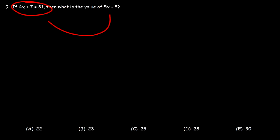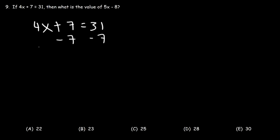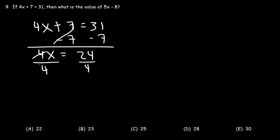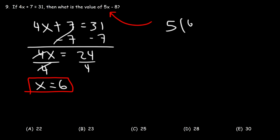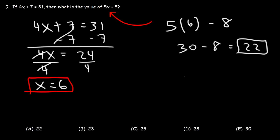Number 9. If 4x plus 7 is equal to 31, then what is the value of 5x minus 8? We solve for x in the equation first. Subtracting both sides by 7: 31 minus 7 is 24. Then dividing both sides by 4: 24 divided by 4 is 6, so x equals 6. Now plug that into the expression: 5 times 6 minus 8. 5 times 6 is 30, and 30 minus 8 is 22. So answer choice A is the right answer.